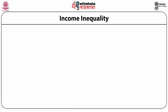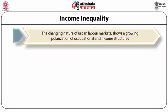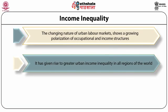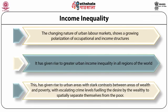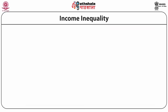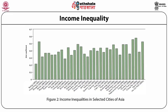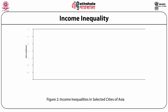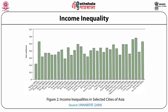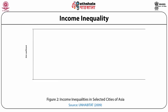There is also an issue of income inequality. The changing nature of urban labor markets, which shows growing polarization of occupational and income structures, has in part given rise to greater urban income inequality in all regions of the world. This in turn has given rise to urban areas with stark contrast between areas of wealth and poverty, with escalating crime levels fueling the desire by the wealthy to spatially separate themselves from the poor. The income inequalities in selected Asian economies can be observed from Figure 2, which shows that for many cities in Asia, the income inequalities are either close to or higher than the Gini coefficient value of 0.4.